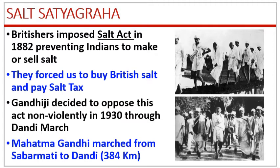Gandhiji and the Indian National Congress chose to oppose this act as a part of the civil disobedience movement in 1930. The 24-day march lasted from 12th March 1930 to 5th April 1930.